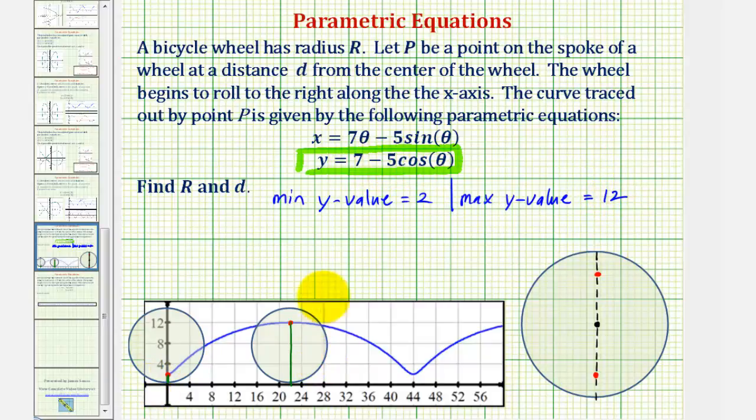Now looking at our graph here, because the minimum y value is two, the distance from this point on the spoke to the edge of the wheel is two units. So if we enlarge this, we know that this length here is two units.